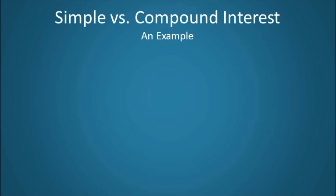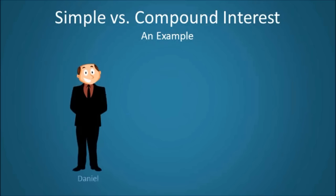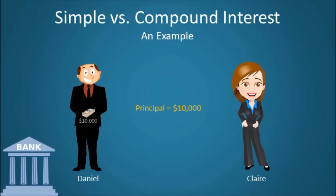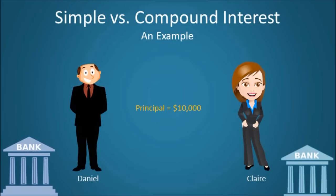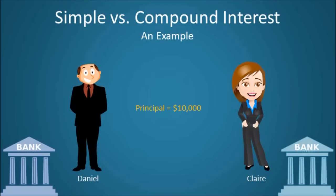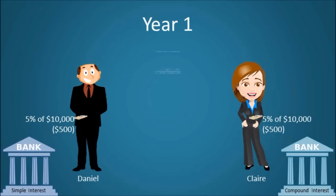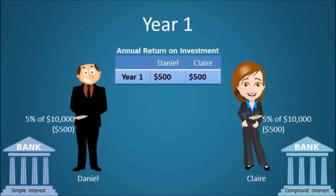In order to differentiate between simple and compound interest, consider the example of Daniel and Claire. Daniel and Claire each deposit $10,000 in high-interest savings accounts. However, Daniel's bank offers only simple interest while Claire's bank offers compound interest. After the first year, both Daniel and Claire made $500, or five percent, on their initial deposit. However, for all subsequent years their return on investment, or ROI, will be different.